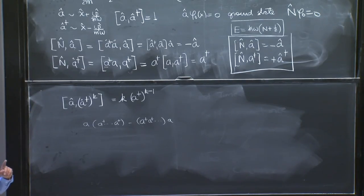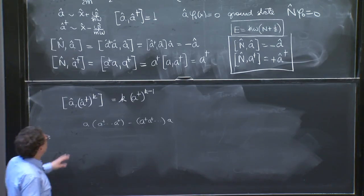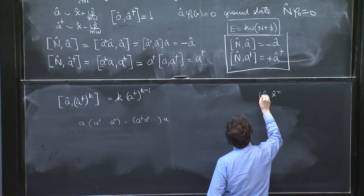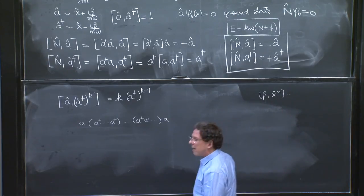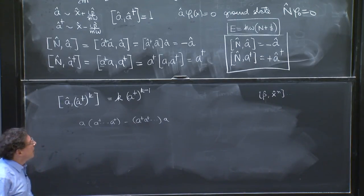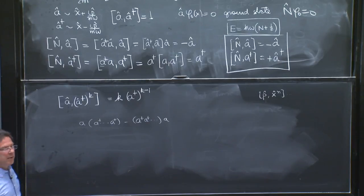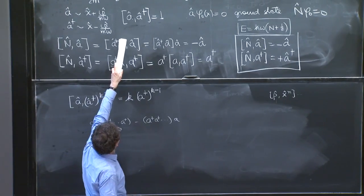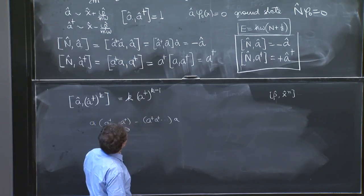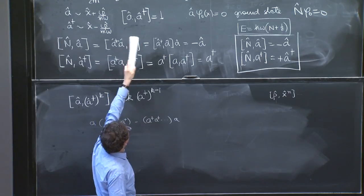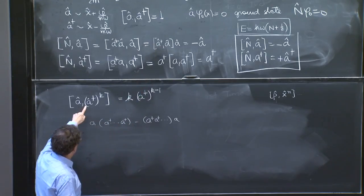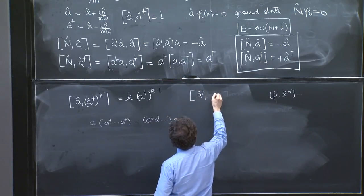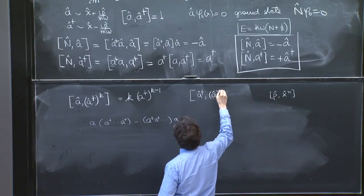And you should realize that this is not all that different from the kind of commutators you had, like p with x to the n. This was very similar. It might be a good time to review how that was done, in which that pretty much gives you an x to the n minus 1 times a factor of n, because p is a derivative. You could almost think of a as the derivative with respect to a dagger. And then this commutator would be 1. So this is true. And there's also, if you want,